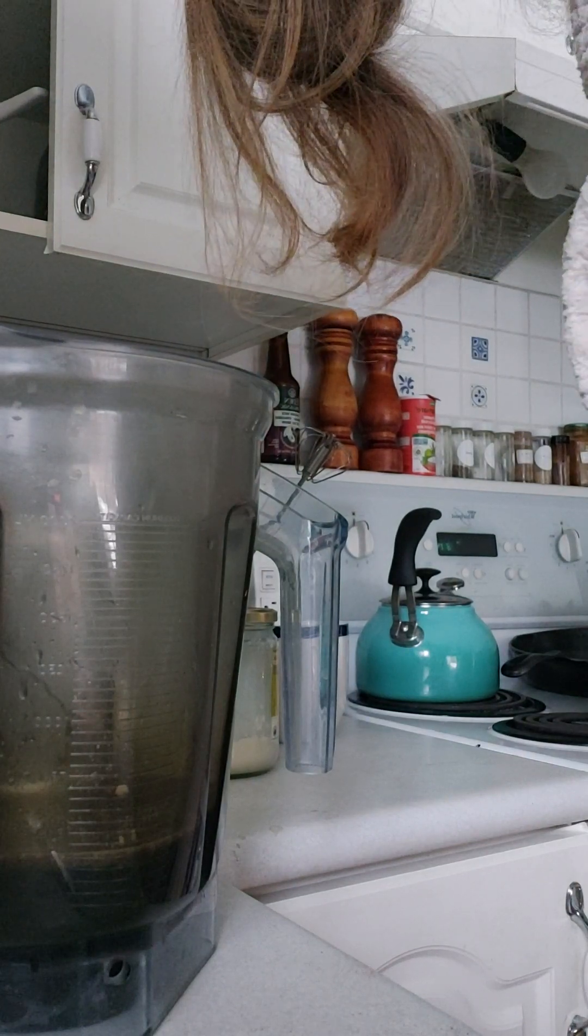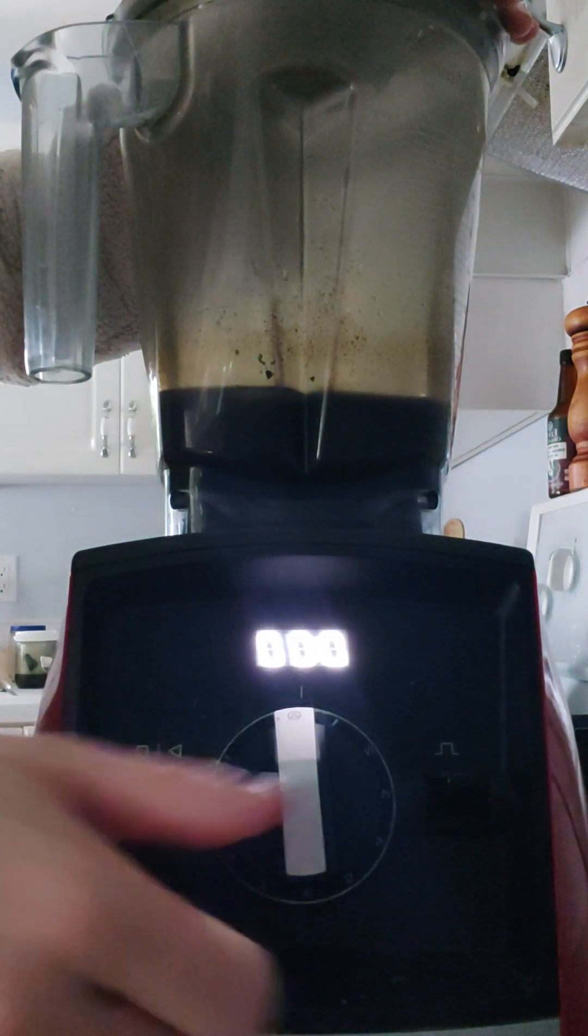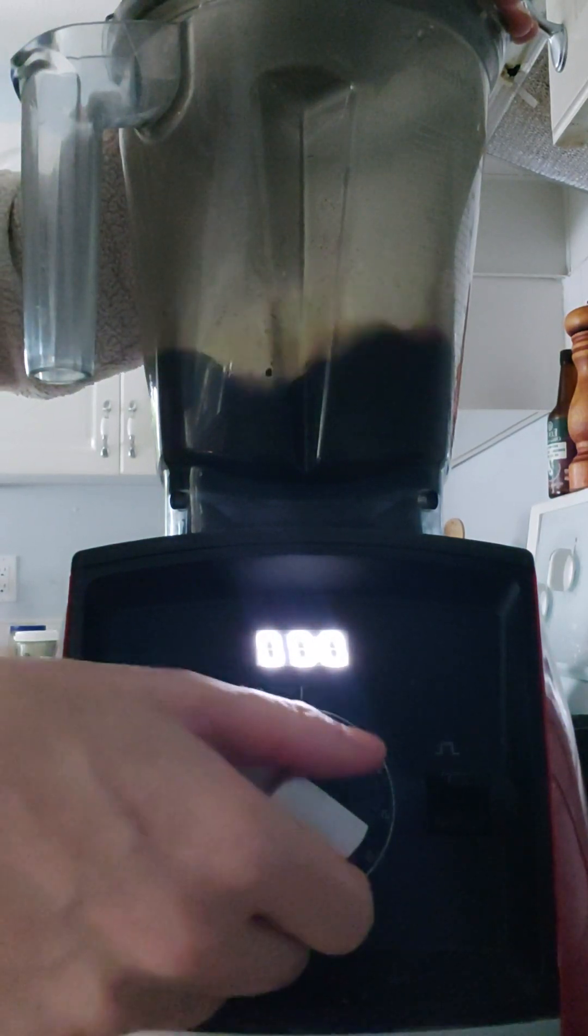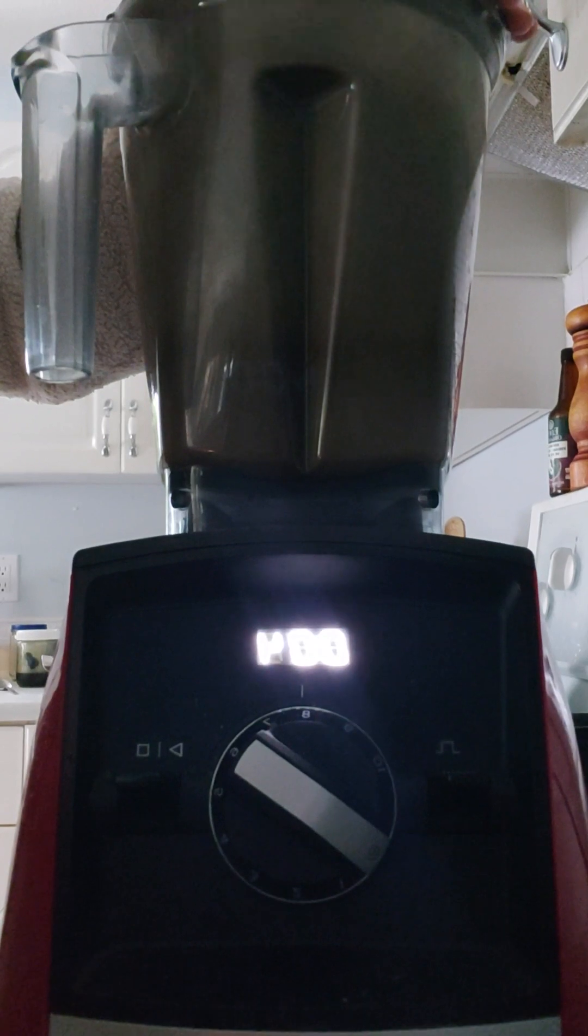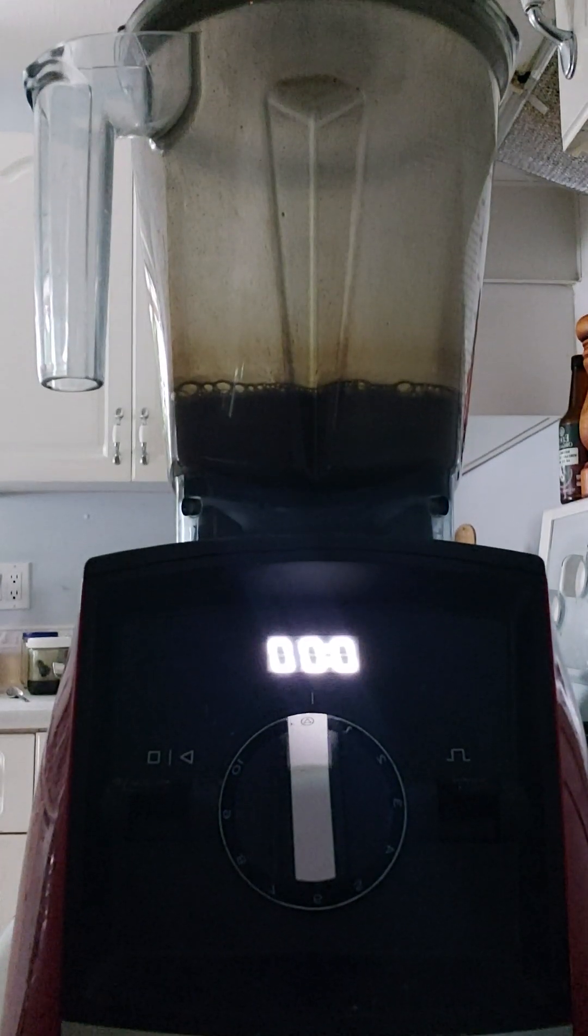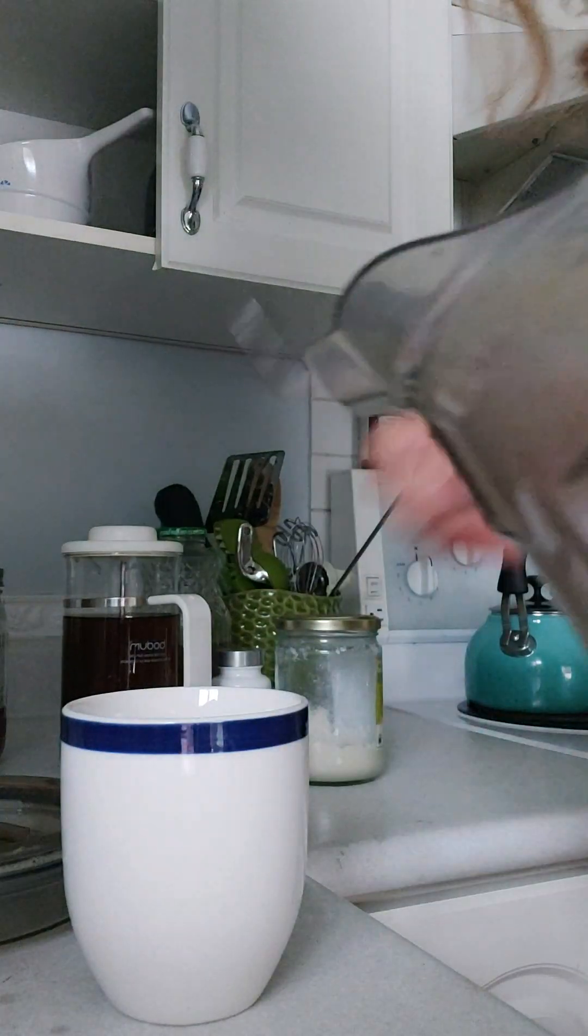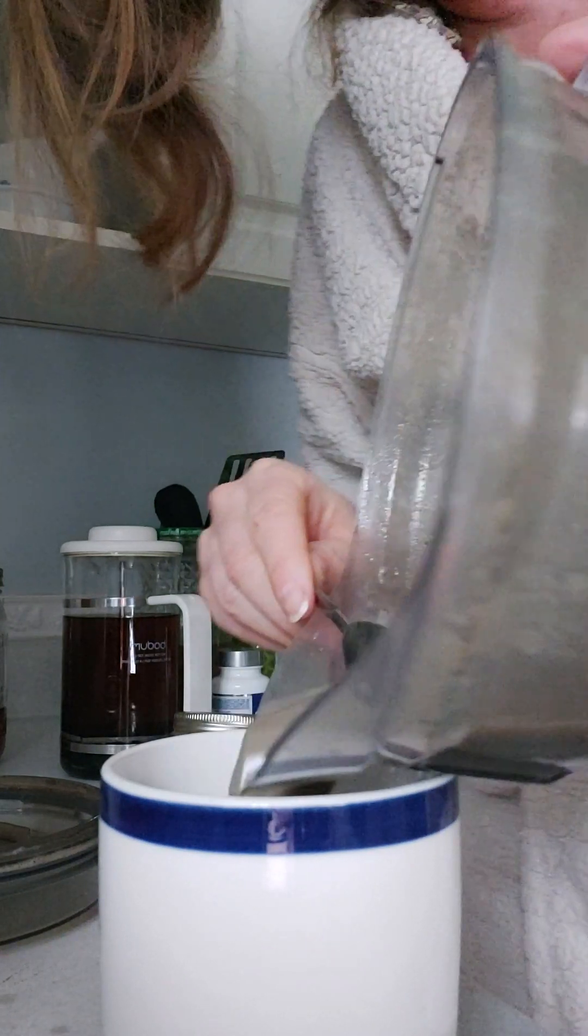Okay, now I'm going to blend it. All right, so I did it for about 15 seconds on the blender at high. Okay, so now this is my afternoon mug and I just use a spoon just to stop the foam from coming all at once.